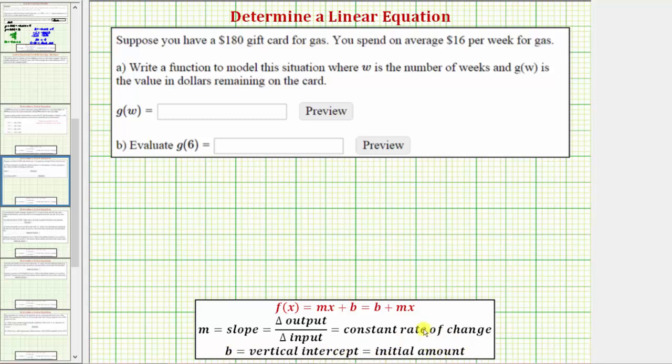In our case though, because we have a function g(w), the linear function would be in the form g(w) = mw + b. Therefore, we want g(w) = b + mw.